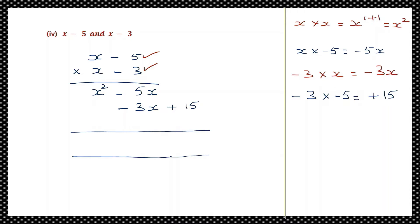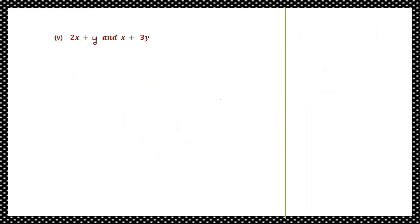So now let's start with x squared. Then going on to the x column, the signs are the same — put the same sign and add: 5 plus 3 is 8, so that's 8x, plus 15. So the final answer is x squared minus 8x plus 15.